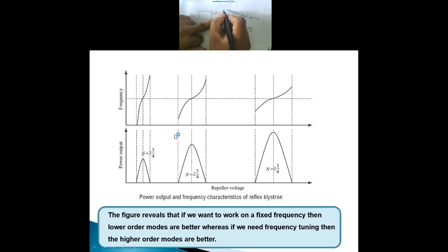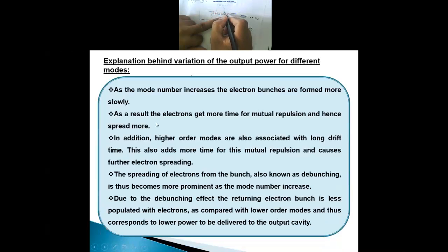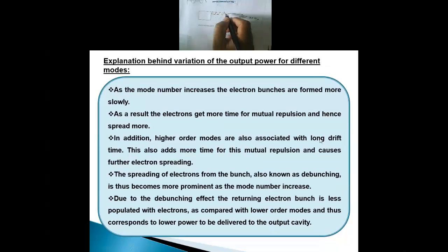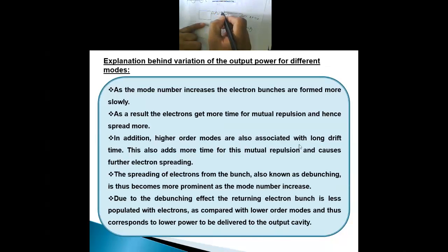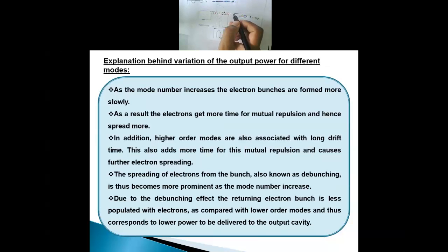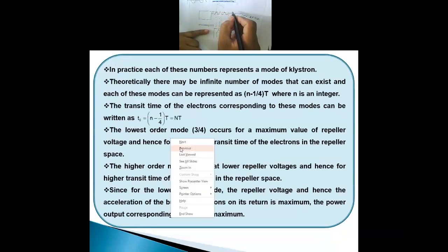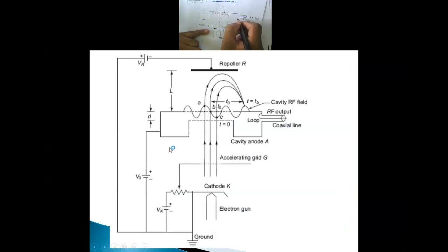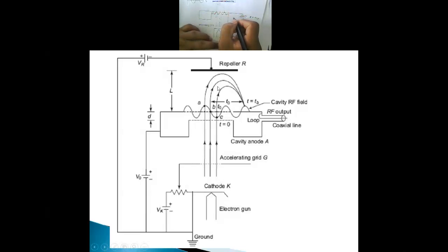When the repelled electrons return to the cavity at a positive half cycle, they release energy to the RF field. If the RF output is more than the cavity loss, the output will be amplified and RF oscillation takes place. If the cavity loss and the RF output are equal, steady oscillation takes place inside the cavity — this is called microwave oscillation. The RF output is obtained through the coupling probe.